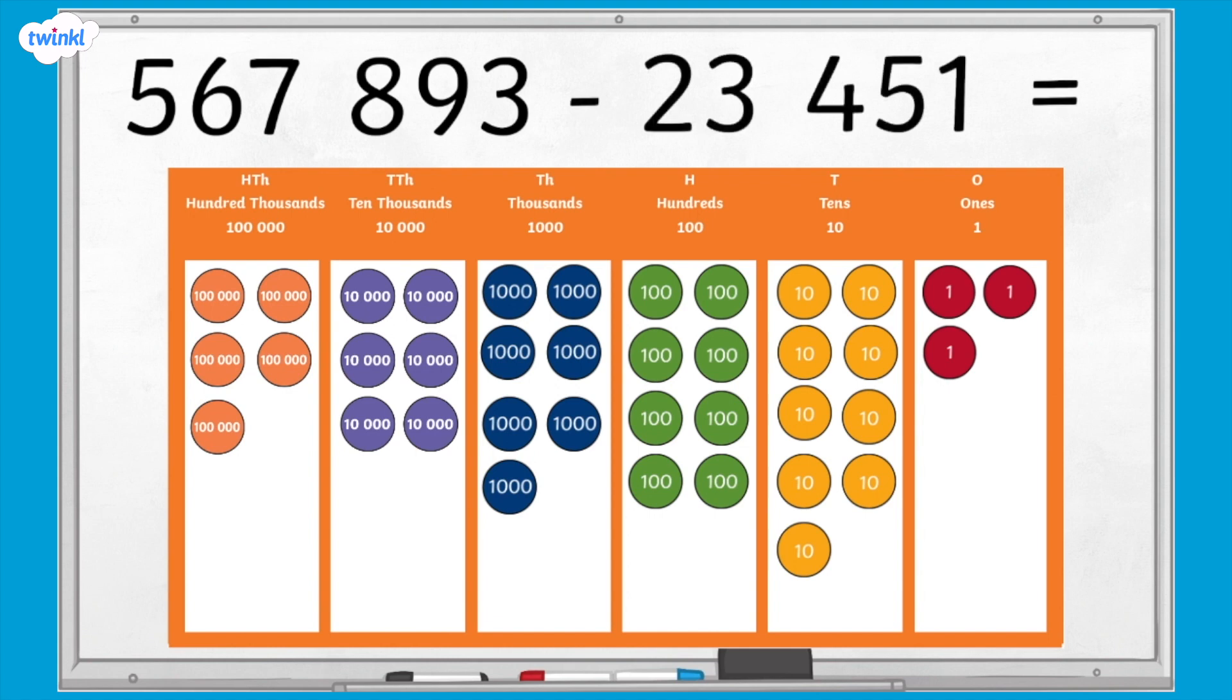Next I'm going to subtract 23,451. Can you complete the subtraction by crossing out the correct amount of counters on the place value grid? Now we're going to check our calculation using column subtraction.